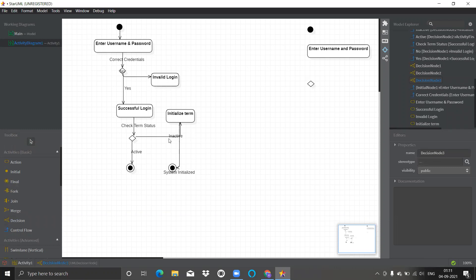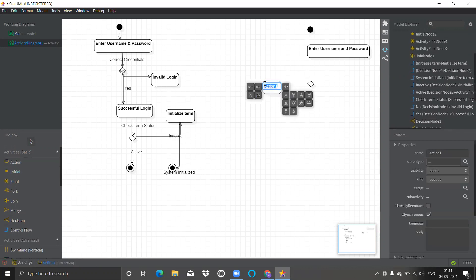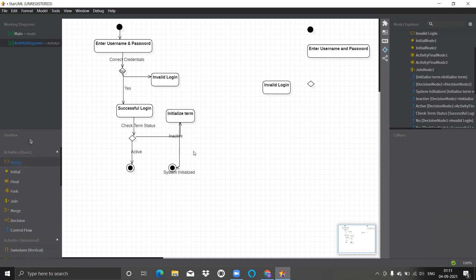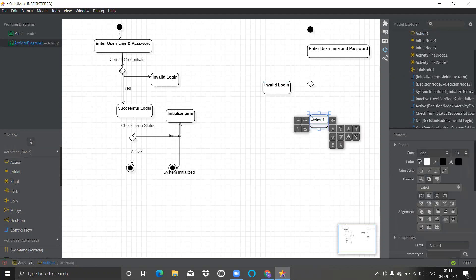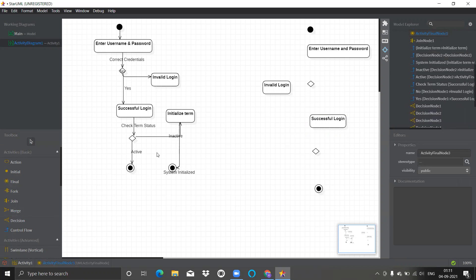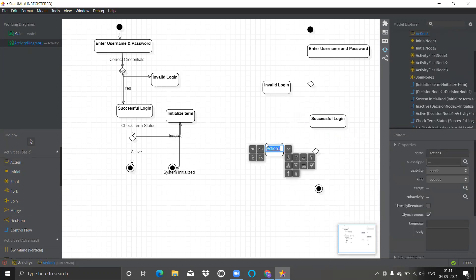After that one decision is there. You all can see one decision symbol is also available. Let's use this. After decision then one again action is there. I'll just get this action over here. Invalid login. One more action. If the login credentials are correct then successful login. Again one decision is there. Let's get one decision over here. If correct decision is there, then we need to stop it. Final symbol is there. Let's stop here. If term is not yet initialized, then let's get one another action that is initialized.